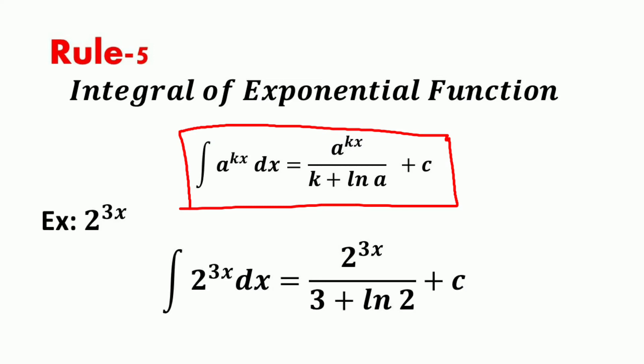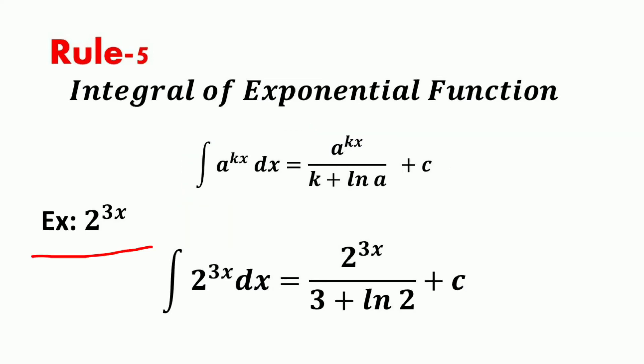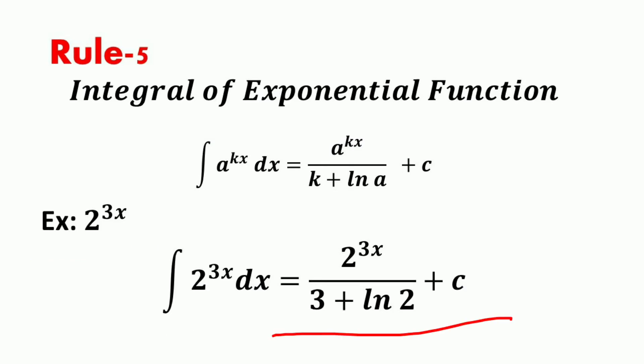For example, if we have the exponential function 2^(3x), then the integral of 2^(3x) dx is equal to 2^(3x) divided by k·ln2, where k is 3, plus c. That is, 2^(3x) divided by (3 · ln 2) plus c.